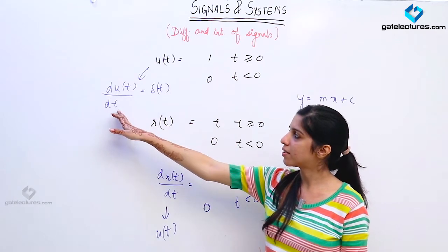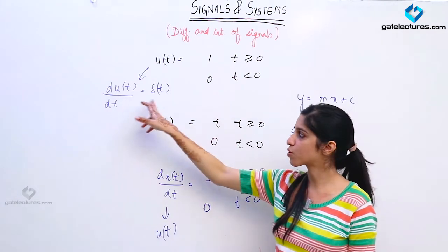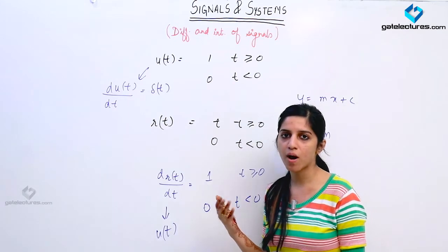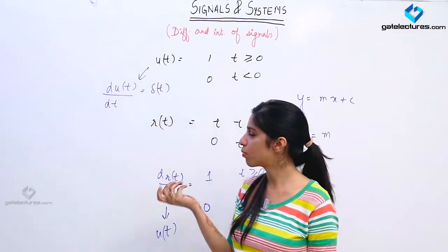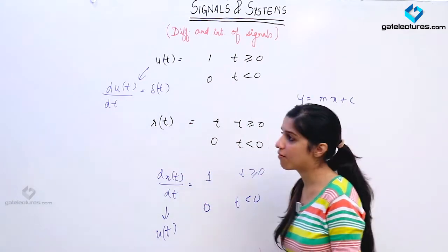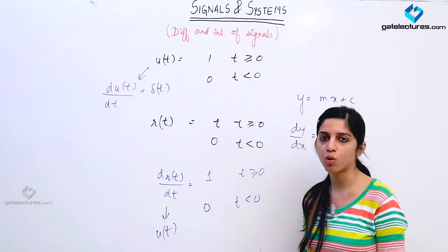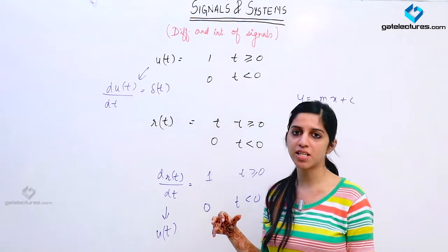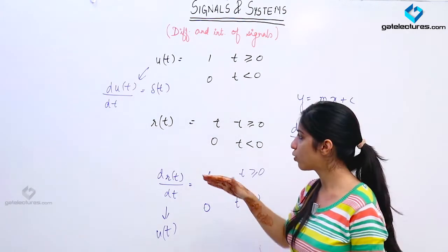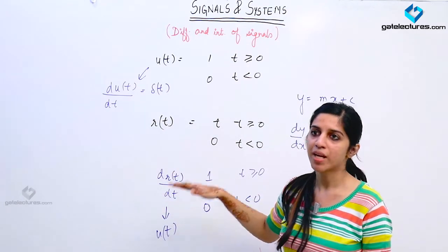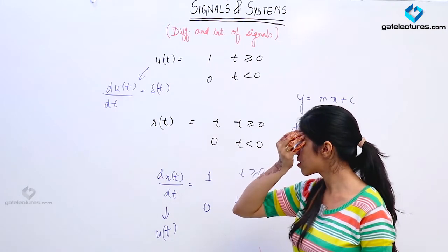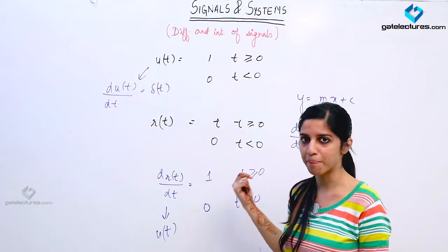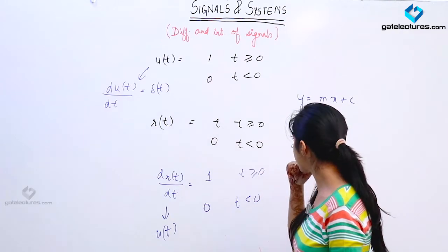So we consider that differentiation of unit step is going to be an impulse. Whenever you want to find the derivative of a graph, suppose the graph consists of straight lines — when you differentiate that graph you are going to obtain steps. And if the graph consists of steps, when you differentiate it you are going to obtain impulses. So we are going to look at an example now.